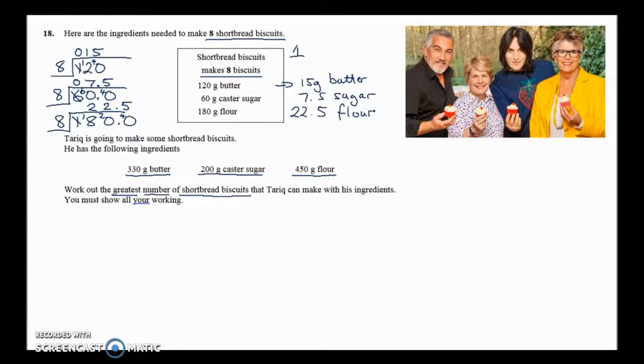Now we've got a recipe for 8 and a recipe for 1. Let's see how many biscuits we can make with 330 grams of butter. I'm going to use the 120 first to see how many lots of that go into 330. Well I know 2 lots of 120 is 240. So that's not quite all the way there, but we're getting there. And each of these 120 is worth 8 biscuits because it comes from the 8 biscuit recipe.